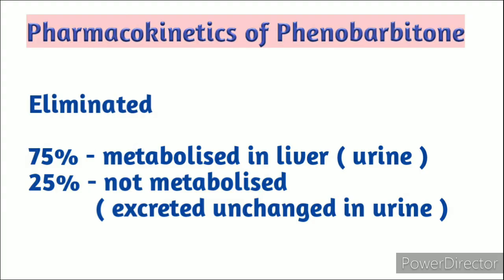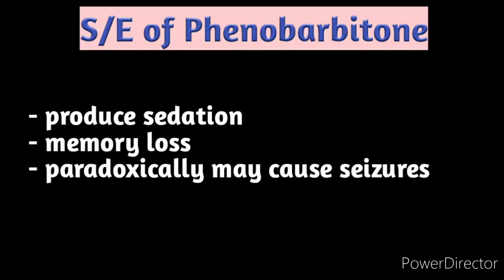Regarding pharmacokinetics of phenobarbitone: 75% is metabolized in the liver and 25% is excreted unchanged in urine. Side effects of phenobarbitone include sedation, memory loss, paradoxically may cause seizures, and hyperkinesia or excitation in children.